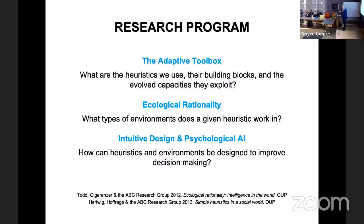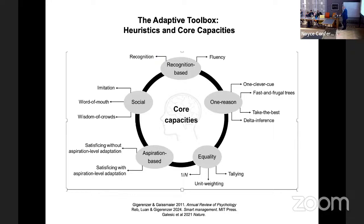The final question is one of application — doing intuitive design using all these insights. Let me start with the adaptive toolbox. There are core capacities that humans have, on the basis of which heuristics can be simple, though the core capacities themselves are quite complex — meaning it's very hard to build a brain that cannot do that.